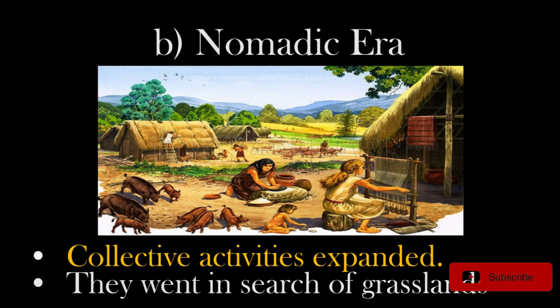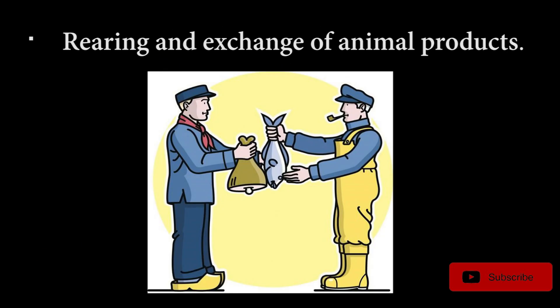Nomadic Era: In the nomadic era, collective activities expanded further. In addition to hunting, people started to go in search of grasslands. They started rearing animals and exchanging animal products.